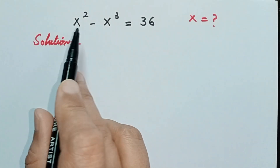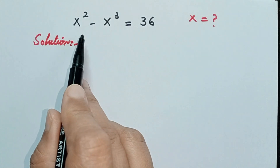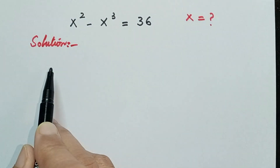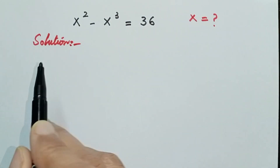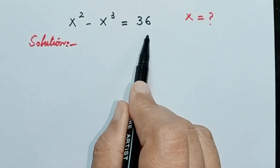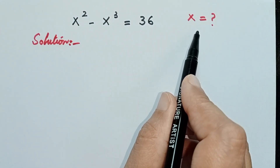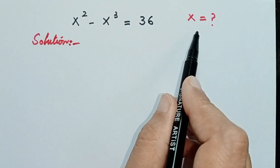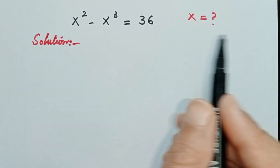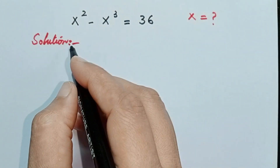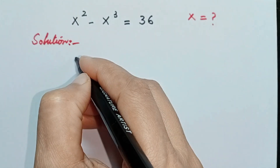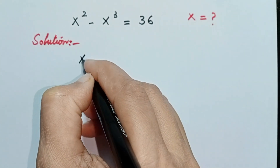Hello everyone, welcome back to Brain Equation. Today we are going to solve the question: given x squared minus x cubed is equal to 36. So we need to calculate x here. First of all, I will write the question — x squared minus x cubed is equal to 36.